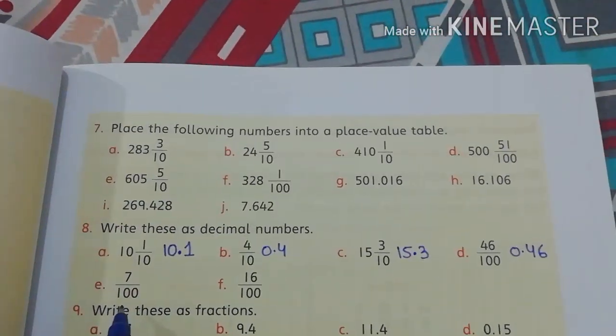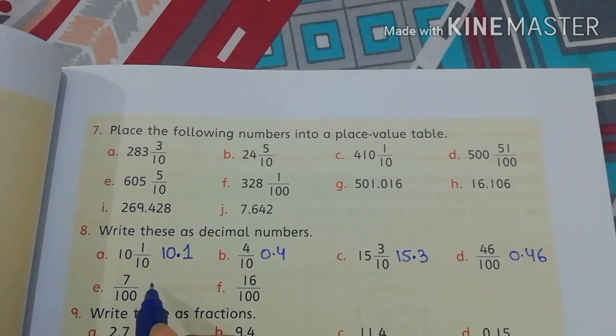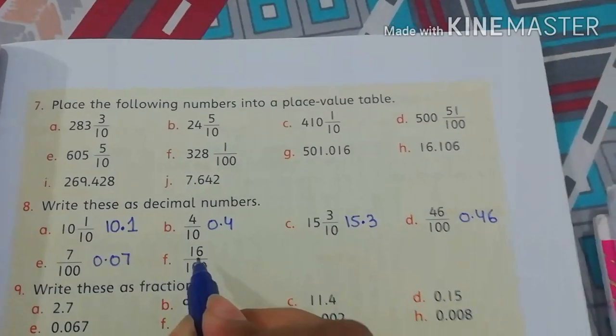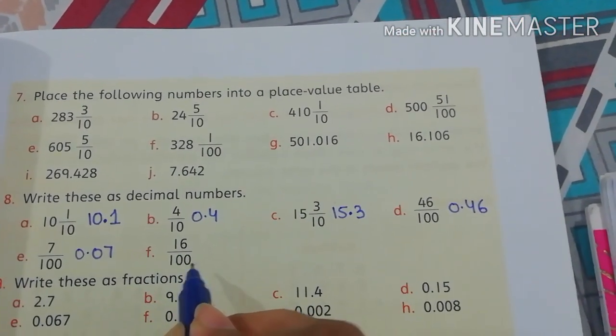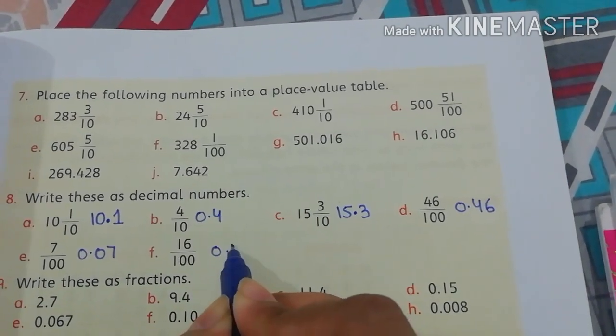Part E, 7 by 100. 7 by 100 in decimal is 0.07. Part F, 16 by 100. That is 0.16.